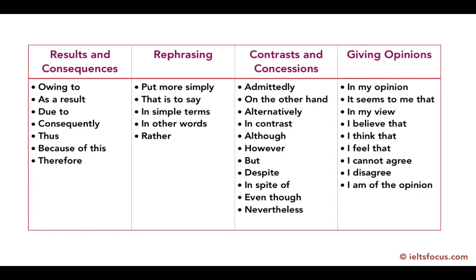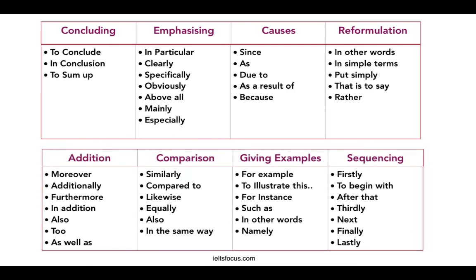Here's a whole list of cohesive devices — you can pause the video and have a closer look. We've got results and consequences, rephrasing, contrasting, giving opinions, and more. For concluding, you just need one of: 'in conclusion,' 'to conclude,' or 'to sum up.' There are also categories for emphasis, causes, reformulation (which means rewording), addition, comparison, giving examples, and sequencing. Sequencing is very good for describing a process, especially in writing task one. The important thing is you shouldn't just memorise the whole list — it just gives you an idea of how many there are and how they can be used.